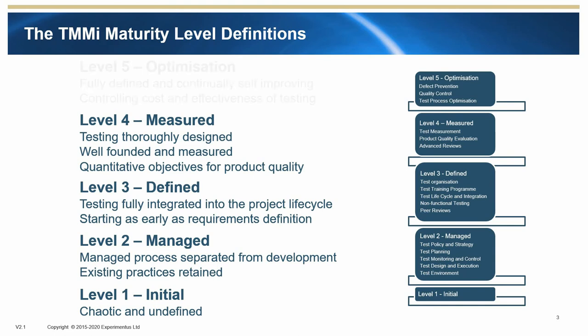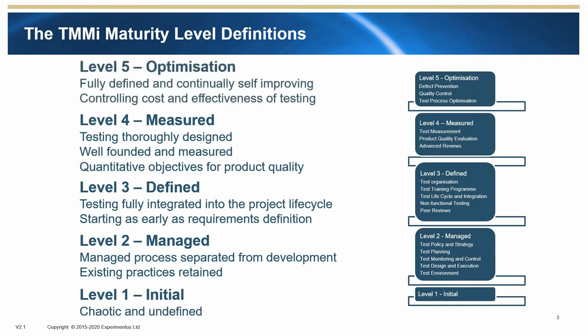Maturity Level 5 is Optimisation. At Level 5, the test processes are continually improved based on objective measurements of statistically controlled processes. Processes are optimised and technological improvements are identified and implemented. The focus is on the prevention of defects and achieving efficiencies in testing.